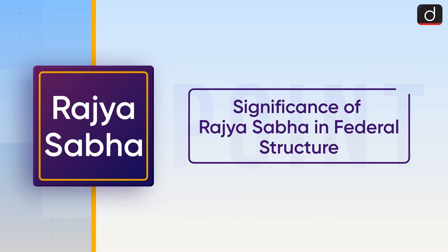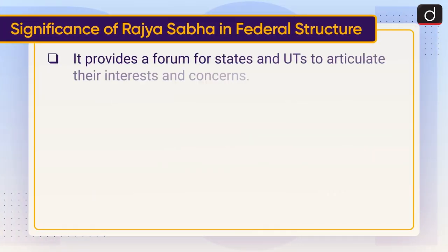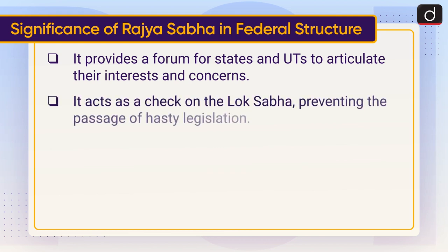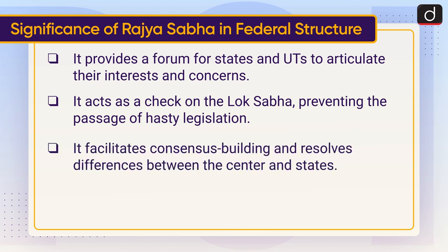Lastly, let's discuss the significance of Rajya Sabha in the federal structure. It provides a forum for states and Union Territories to articulate their interests and concerns. It acts as a check on the Lok Sabha, preventing the passage of hasty legislation. It facilitates consensus building and resolves differences between the Centre and states.